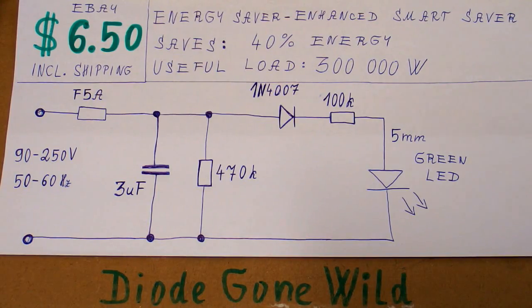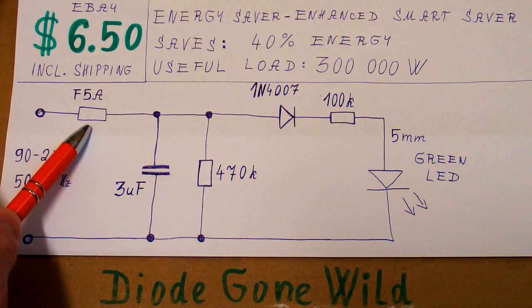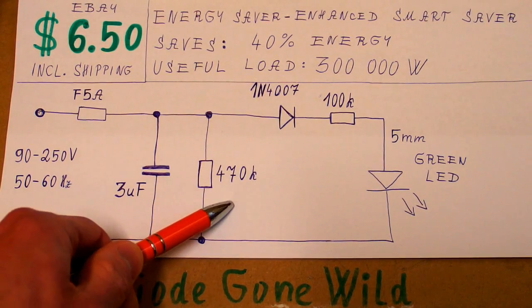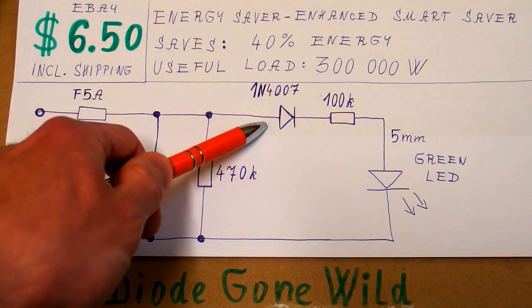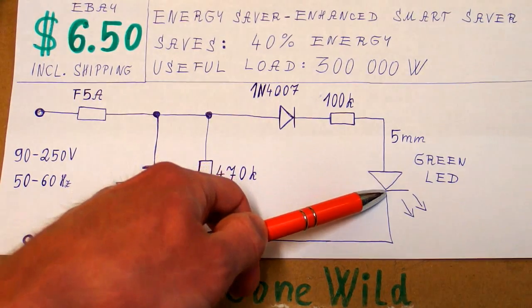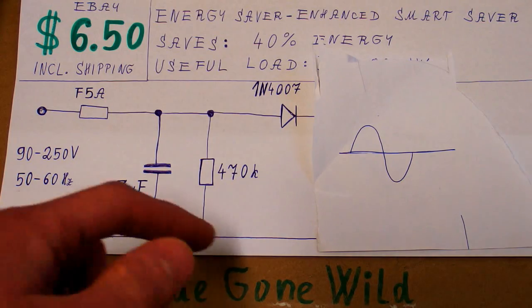So here's the schematic and it's really not complicated. The mains comes in, it goes through a five amp fuse into the three microfarad capacitor and its discharging resistor and then it goes through a diode and a resistor and then into an LED and when you are unplugging this from mains the capacitor can stay charged.